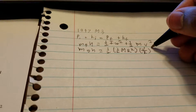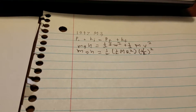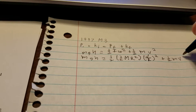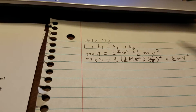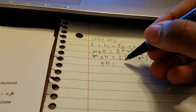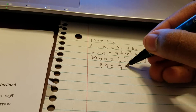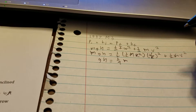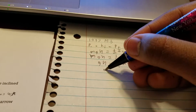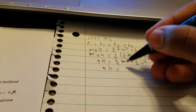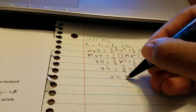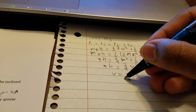Then mgh equals one half times one half mr squared times v over r squared plus one half mv squared. Because it's rolling without slipping, omega equals velocity of center of mass over radius. The r's cancel out and the mass cancels out. This ends up being gh equals one fourth v squared plus one half v squared, so gh equals three fourths v squared, and v equals the square root of four thirds gh.